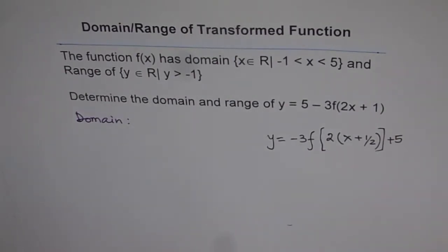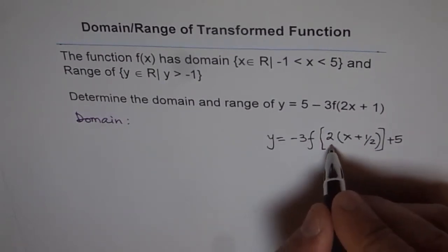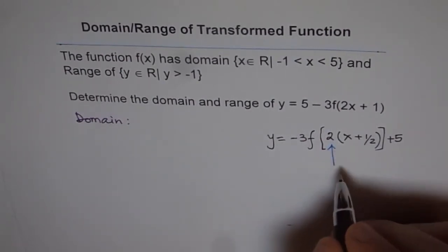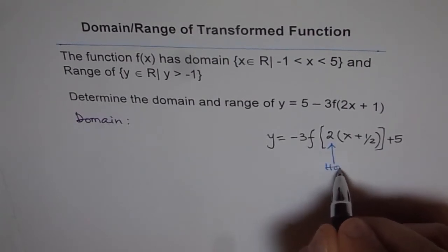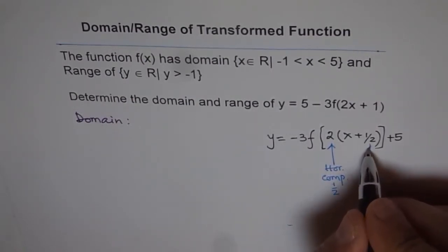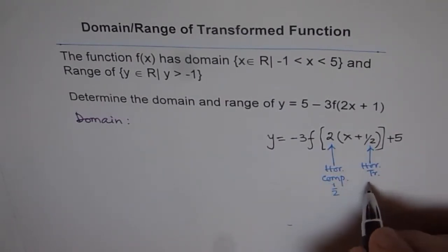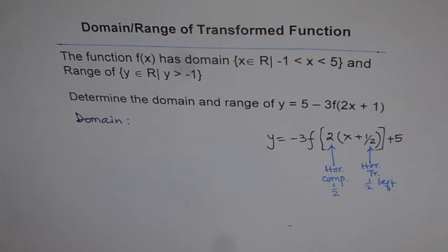So as far as the domain is concerned, the parameters which we need to look into are the ones which are within this square bracket. So this is the one which gives us horizontal compression by a factor of half. And this gives us horizontal translation, half unit left. So these are the parameters which are going to affect domain because they affect the x value.